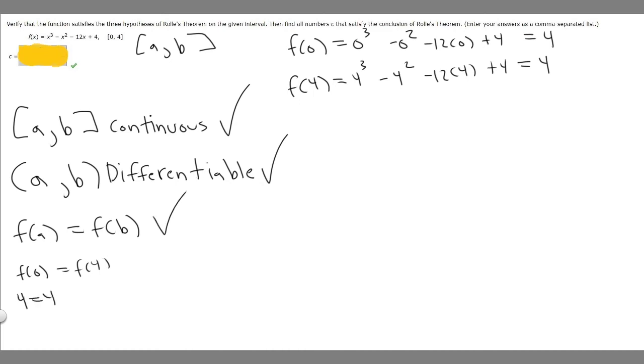Now we can actually use the theorem. The theorem tells us that f'(c) equals 0. So all we've got to do to find c is take the derivative of this function, set it equal to 0, and solve for x. So f(x) = x³ - x² - 12x + 4. The derivative, f'(x), equals 3x² - 2x - 12, and we're setting this equal to 0.